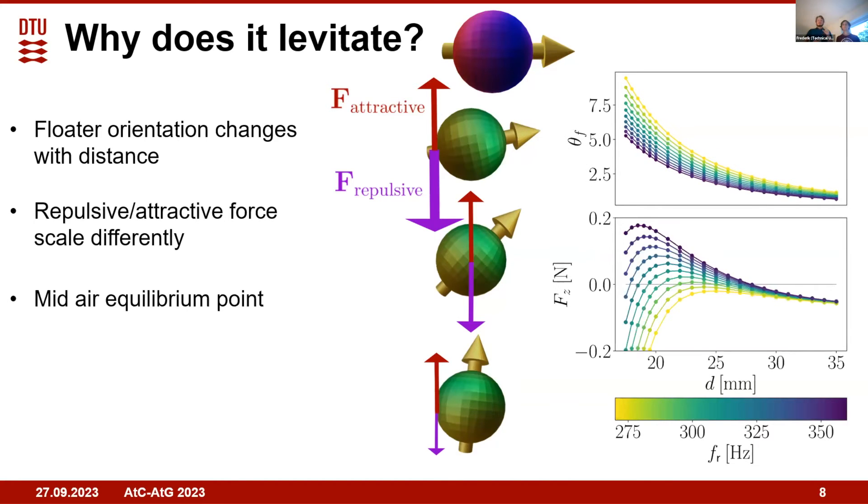When we do simulations with the center of the floater fixed in space, so we just look at their rotation, we can get a force curve like this—the average force in steady state versus distance. In some cases it crosses from positive, so attractive, to repulsive, so negative, as the distance decreases, which corresponds to a stable equilibrium point.